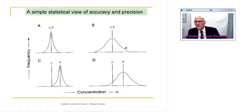And down here we see the opposite, just as we saw with the target example. In this case we have very good precision - small dispersion of data about mean x - but the mean x is significantly removed from the true value.